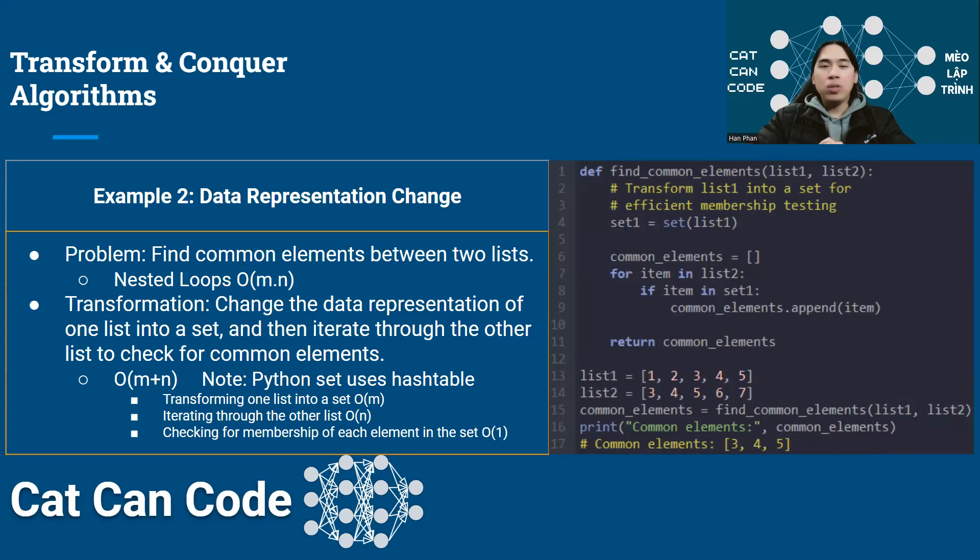Example number two. I will show an example that for transform and conquer, sometimes it's important to change the way you store the data. And by doing that, you can improve the efficiency or you can turn a very hard problem into a simpler problem because the way we represent the data is more convenient.